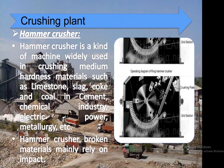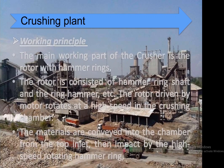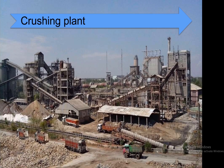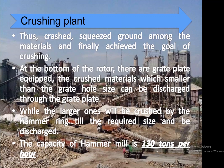A hammer crusher is a machine widely used for crushing medium hardness materials such as limestone, slag, coke, and coal in the cement, chemical, electric power, and metallurgy industries. The hammer crusher breaks materials mainly by impact. The main working part is the rotor with hammer rings, consisting of hammer ring shaft and ring hammers. The rotor is driven by a motor at high speed inside the crushing chamber; materials fed from the top inlet are impacted by the high-speed rotating hammer ring, then crushed, squeezed, and ground.